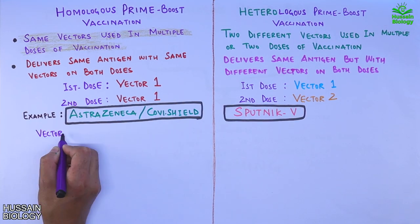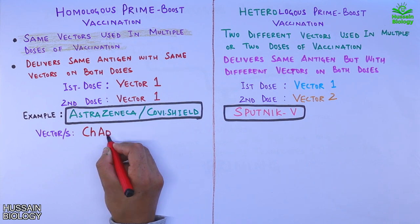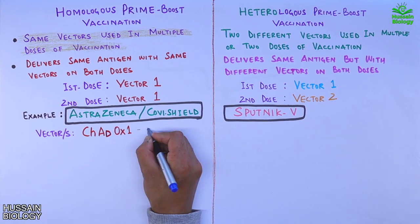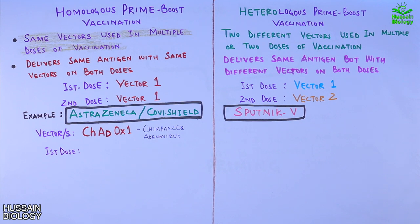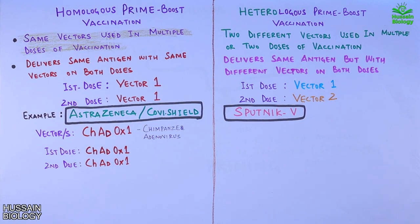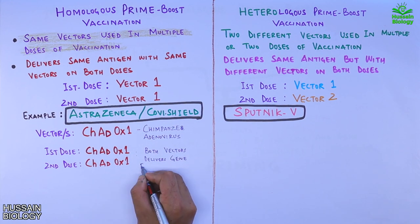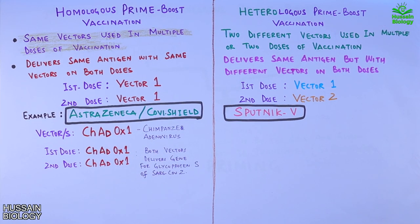The vector for AstraZeneca or Covishield is ChAdOx1, the chimpanzee adenovirus. In its first dose it uses ChAdOx1, and in its second dose it also uses the same vector to deliver the gene of interest — specifically the gene for glycoprotein S of SARS-CoV-2, that is the S protein. On the other hand, Sputnik V uses the heterologous prime-boost method.